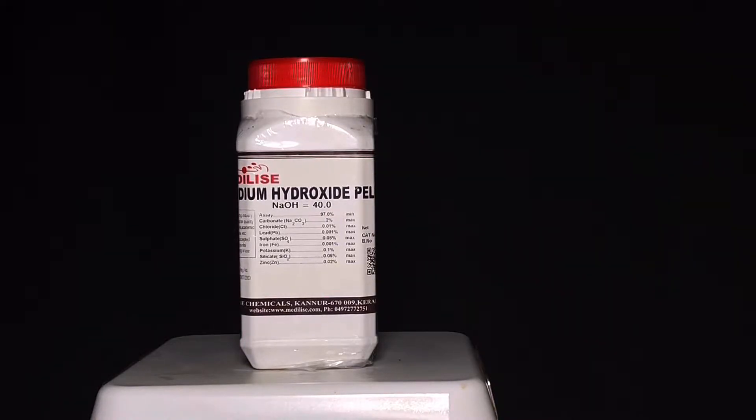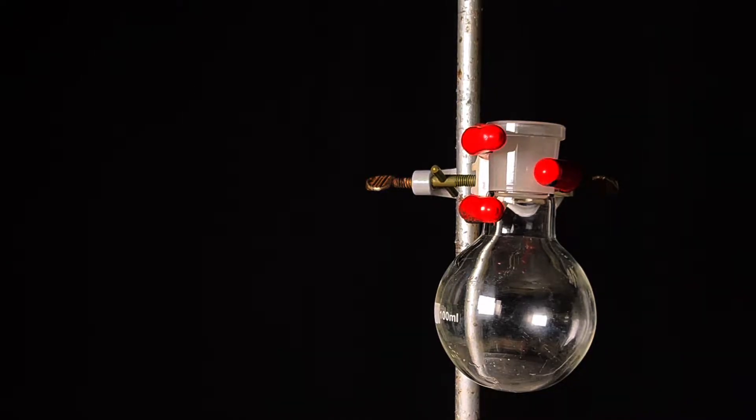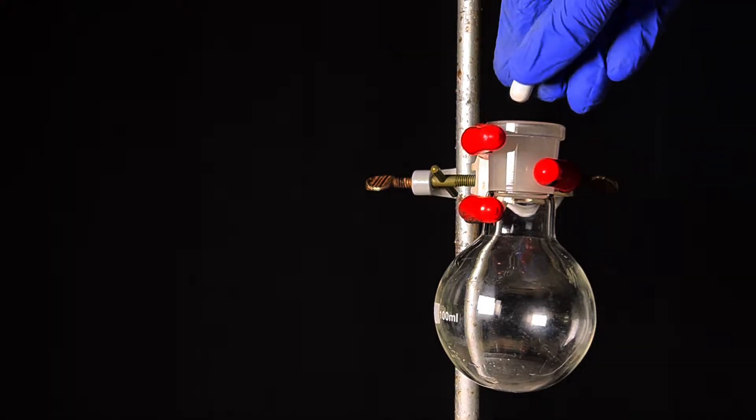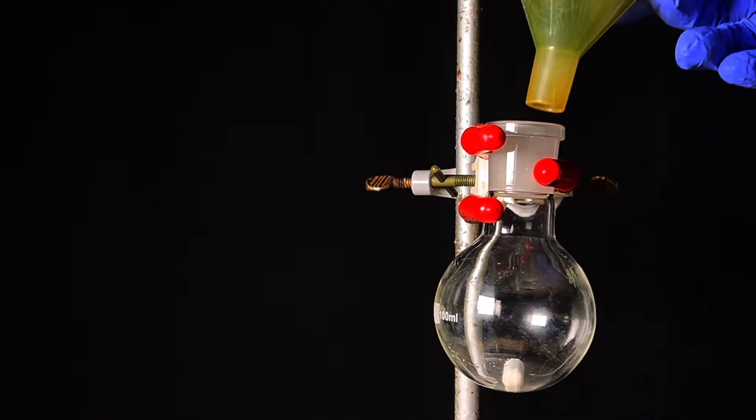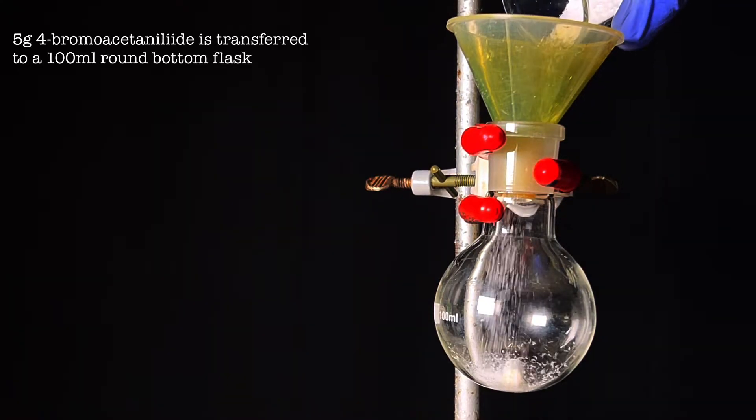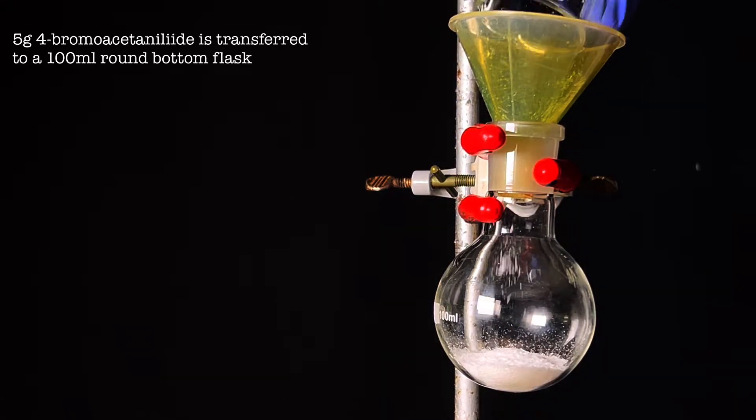A 100 milliliter round bottom flask was fixed onto a stand using a clamp. Using a powder funnel, 5 grams of parabromoacetanilide is transferred to the round bottom flask.